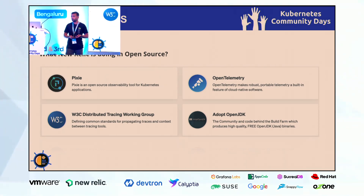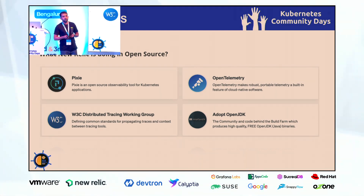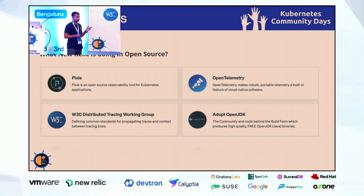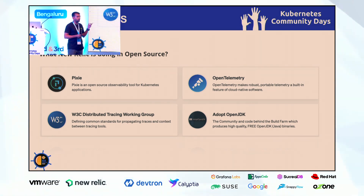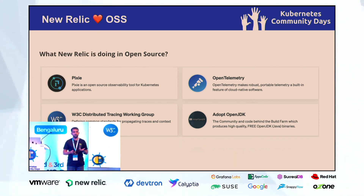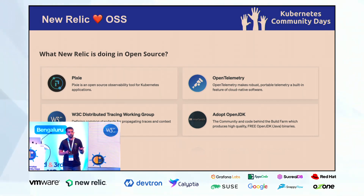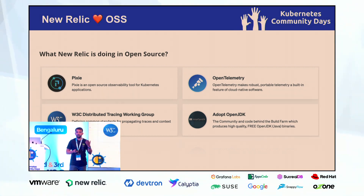What is New Relic doing in the open source space? New Relic is supporting some good open source initiatives. One of them is Pixie. Pixie is a CNCF incubating project with really strong support from New Relic — we are contributing big. Pixie is a good tool if you want to get started with Kubernetes observability. It's a simple tool where you can get hands-on very quickly with observability of your Kubernetes clusters and everything related.